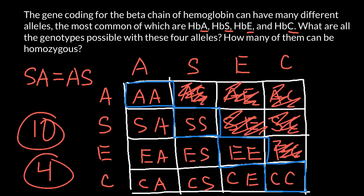First question: what are all genotypes possible? Second: how many of them can be homozygous? And this is all for today. Thank you for your attention. Please subscribe for my new videos that I post almost every day. Thumbs up if you like this video. Please write your comments and questions if you have any. Share this video with your classmates. See you in the next video. Goodbye.